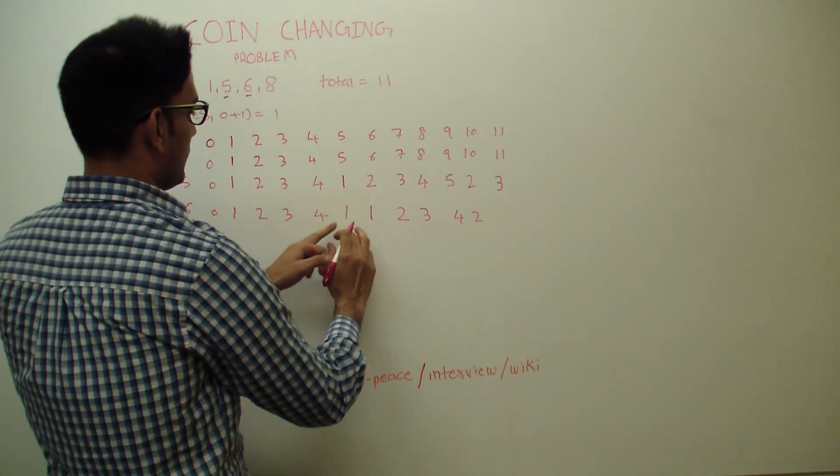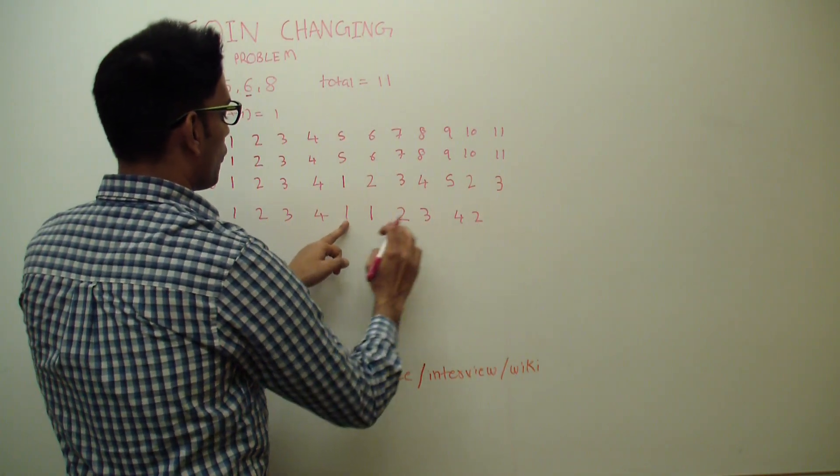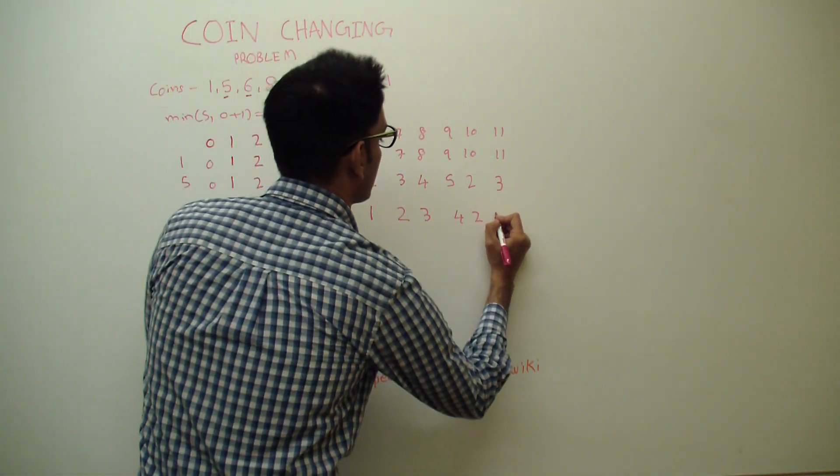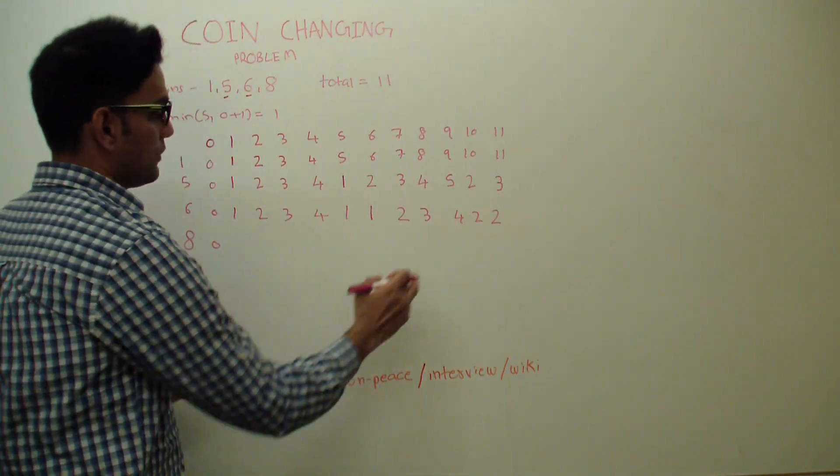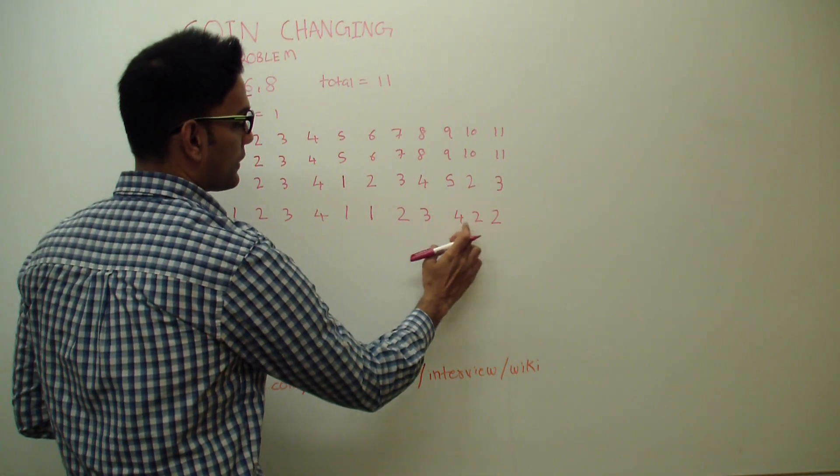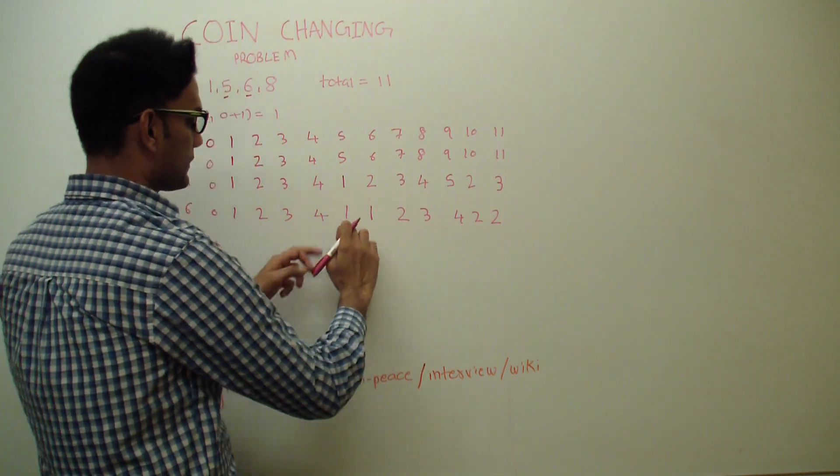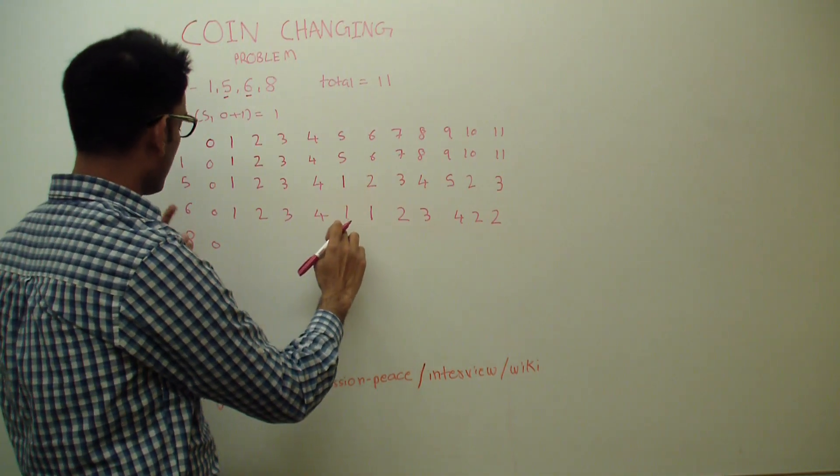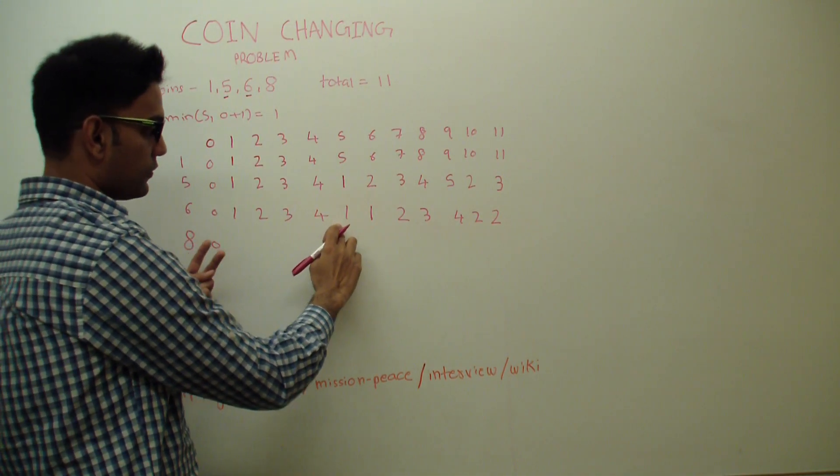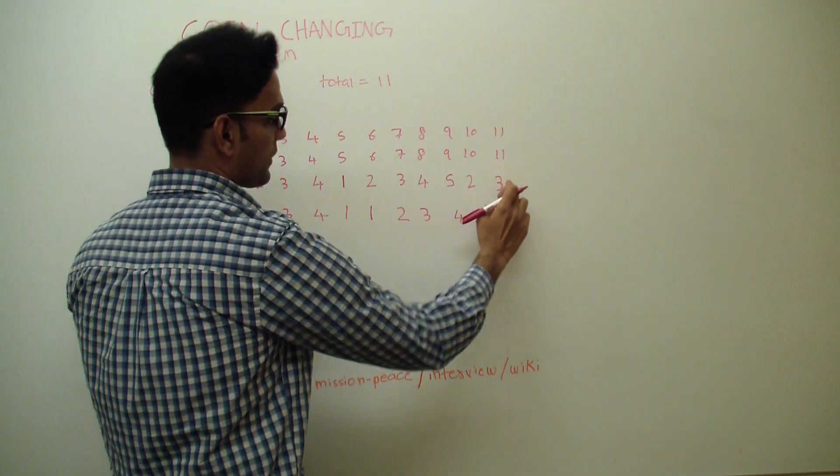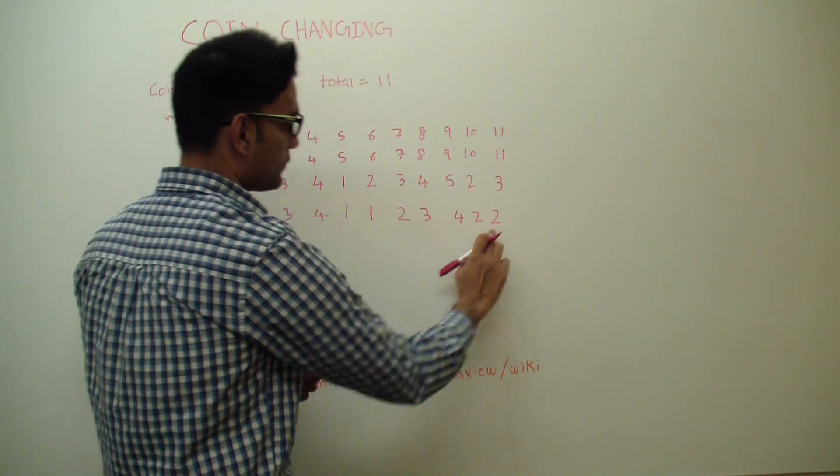And finally, we'll go back 6 from 11, so 1 plus 1, 2. So how did we get this 2? We go back 6 from here: 1, 2, 3, 4, 5, 6. So 1 plus 1 coin of 6, so 2. So either 2 or the guy from the top, minimum of the 2 which is 2, so we'll keep 2.